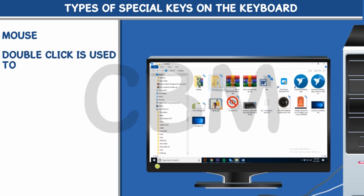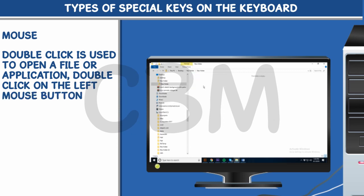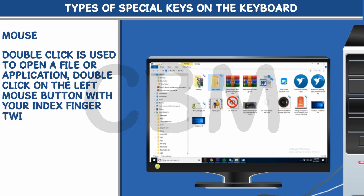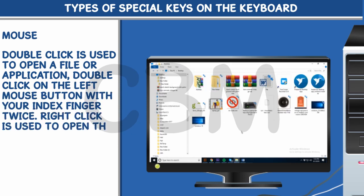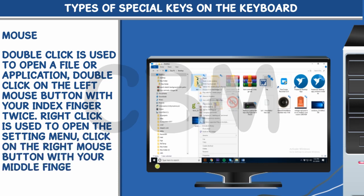Double click is used to open a file or application. Double click on the left mouse button with your index finger twice. Right click is used to open the setting menu. Click on the right mouse button with your middle finger and then release the button.